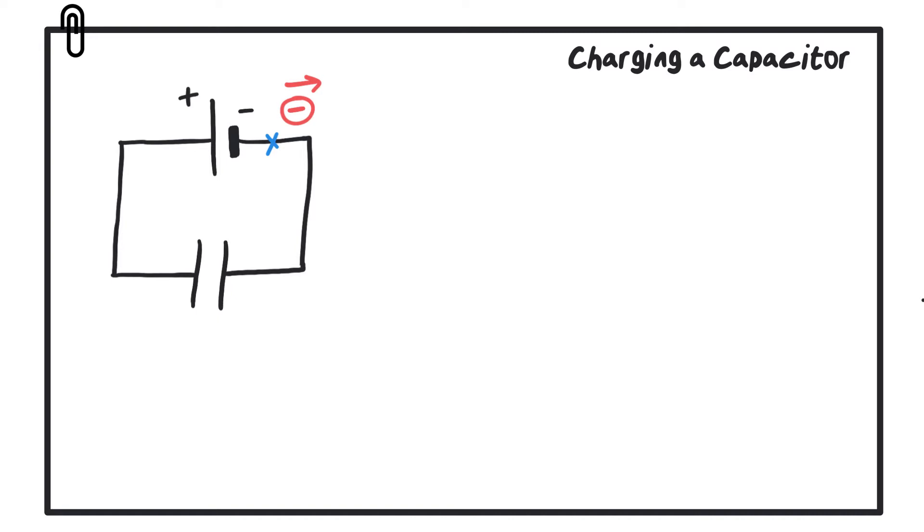Those electrons will repel from the negative terminal of the cell towards the plate and they will gather here on the plate. That means that this plate will have an excess of electrons. So therefore this is the negative side of the capacitor.